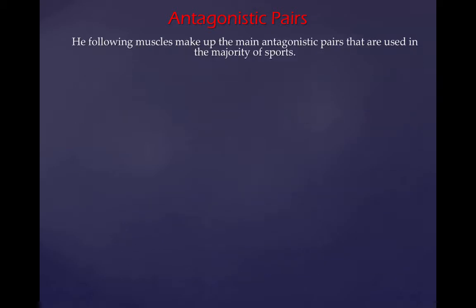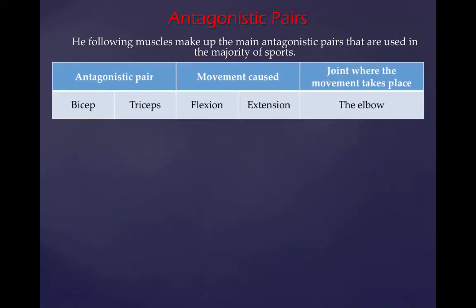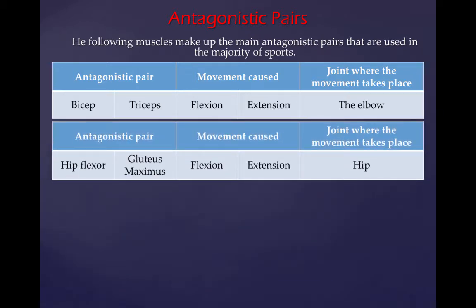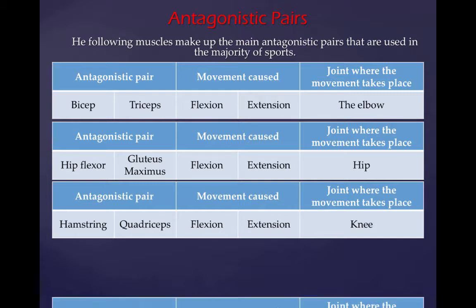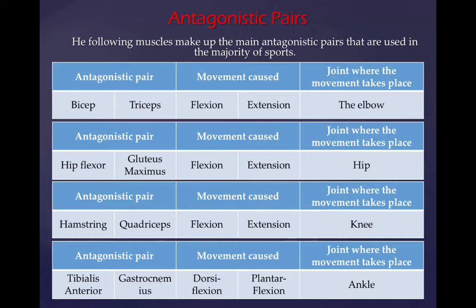The following muscles make up the main antagonistic pairs used in the majority of sports. Bicep and tricep cause flexion and extension at the elbow. The hip flexors and the gluteus maximus cause flexion and extension at the hip. Your hamstring and your quadricep cause flexion and extension at the knee. And your tibialis anterior and your gastrocnemius cause dorsiflexion and plantar flexion at the ankle.